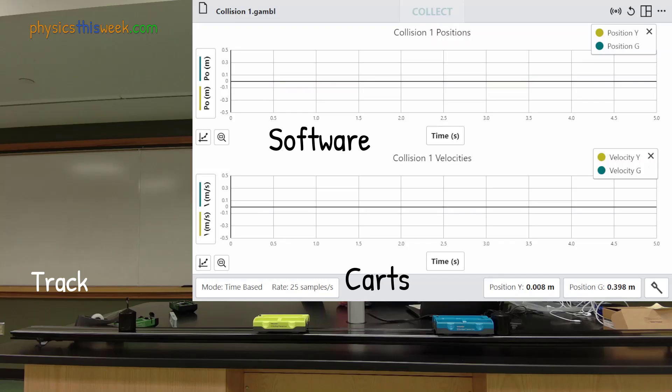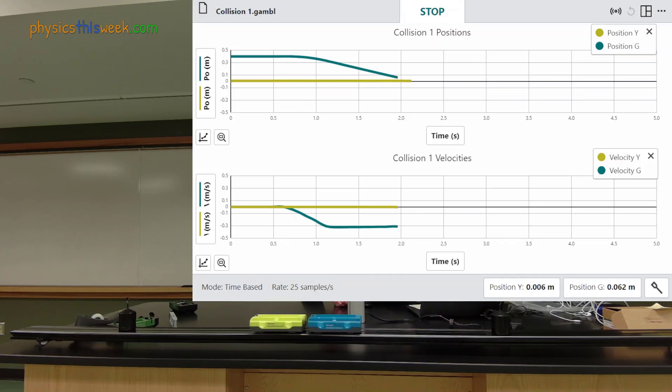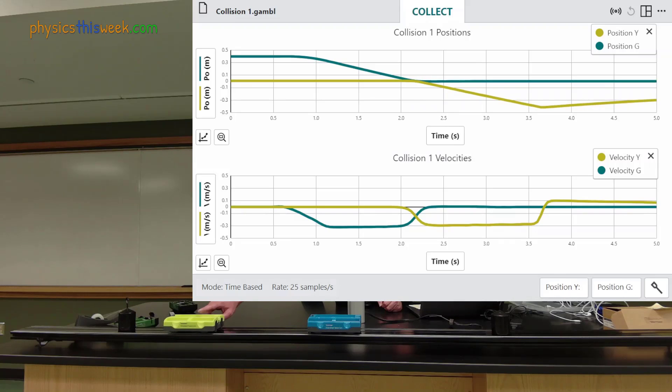There are two 1 kilogram masses on the track as well. These are only used to help position the carts at the beginning of each trial. At the bottom of the screen you can see the carts we are going to collide. Above this is the software window that shows the positions and velocities of the carts.